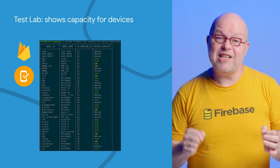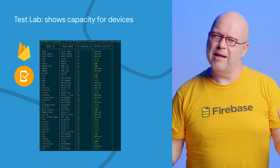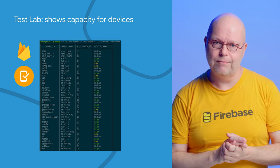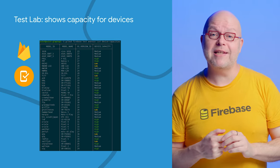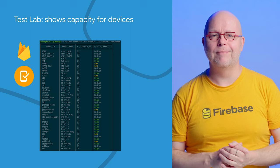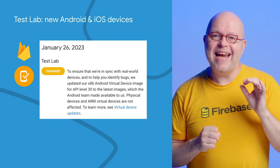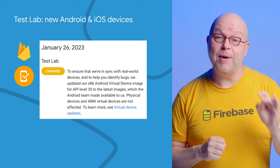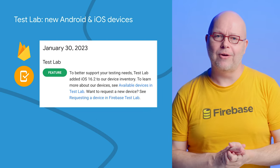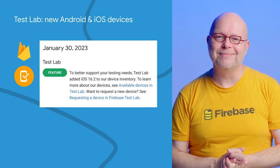You can run your tests on many device models with Test Lab, but some of those models may be in limited supply while for others we may have thousands available. We now measure the available device count, convert that into a label, and show it in the Firebase console and the gcloud CLI. We also updated our x86 Android virtual devices to API level 30, and we added iOS 16.2 devices to the catalog. For more information on all of the releases, check the links in the description.